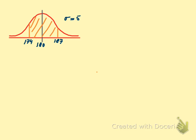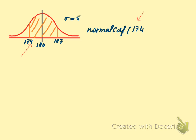This is the area we talk about. On the graphical calculator we have a formula and that's normalCDF. The first number is 174 — that's the left border, minimum 174.